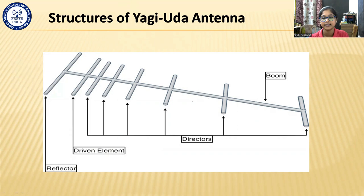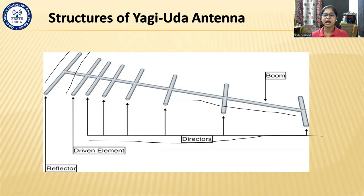This part is called the boom. This is the reflector. This is the driven element. And these are all the directors. This is how the antenna looks, and while making one, you have to follow this structure. You cannot just place the directors in the position of the driven element — the antenna will not work that way.